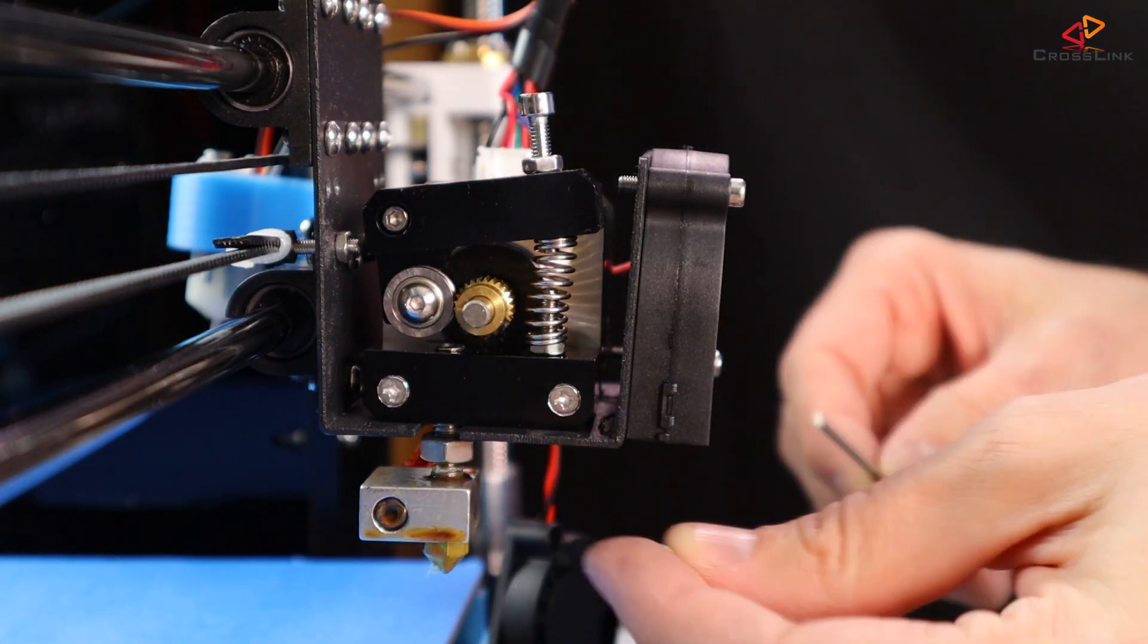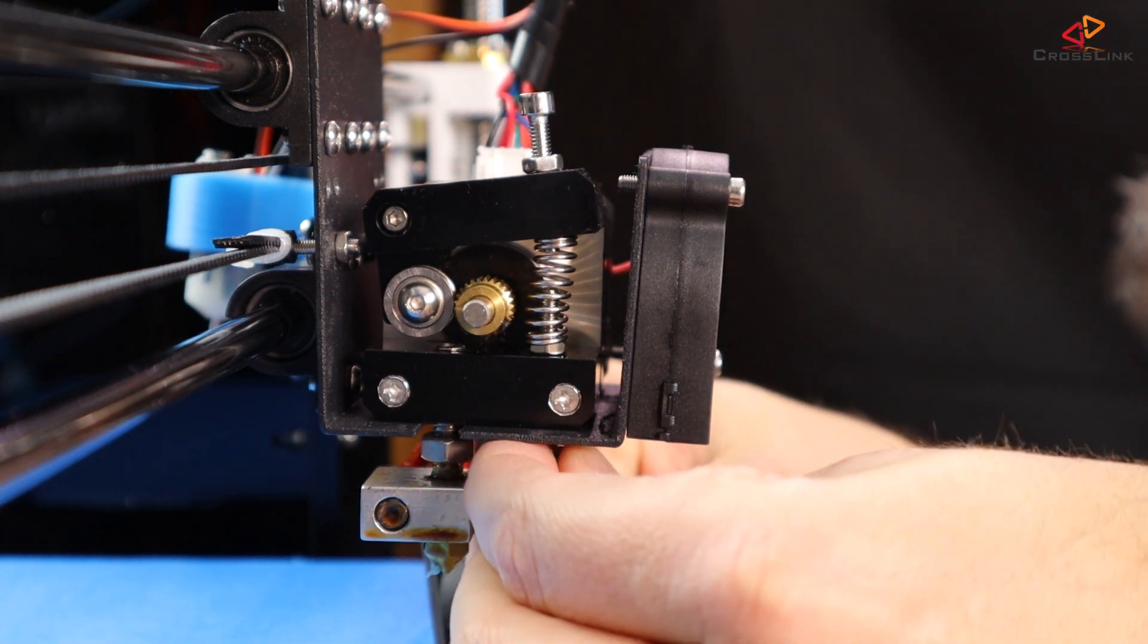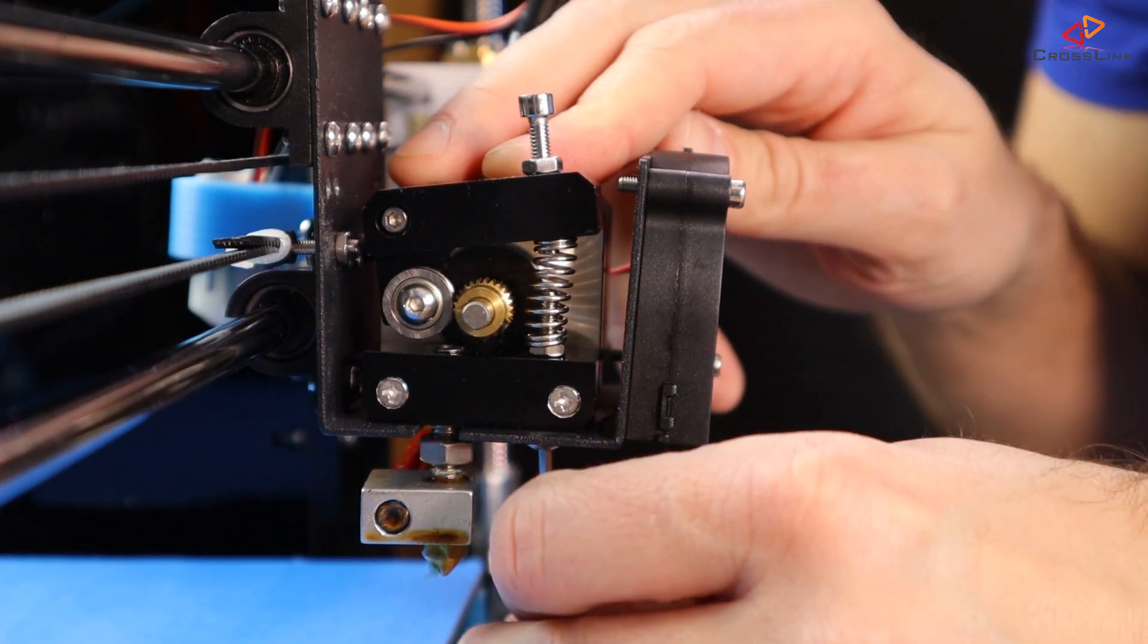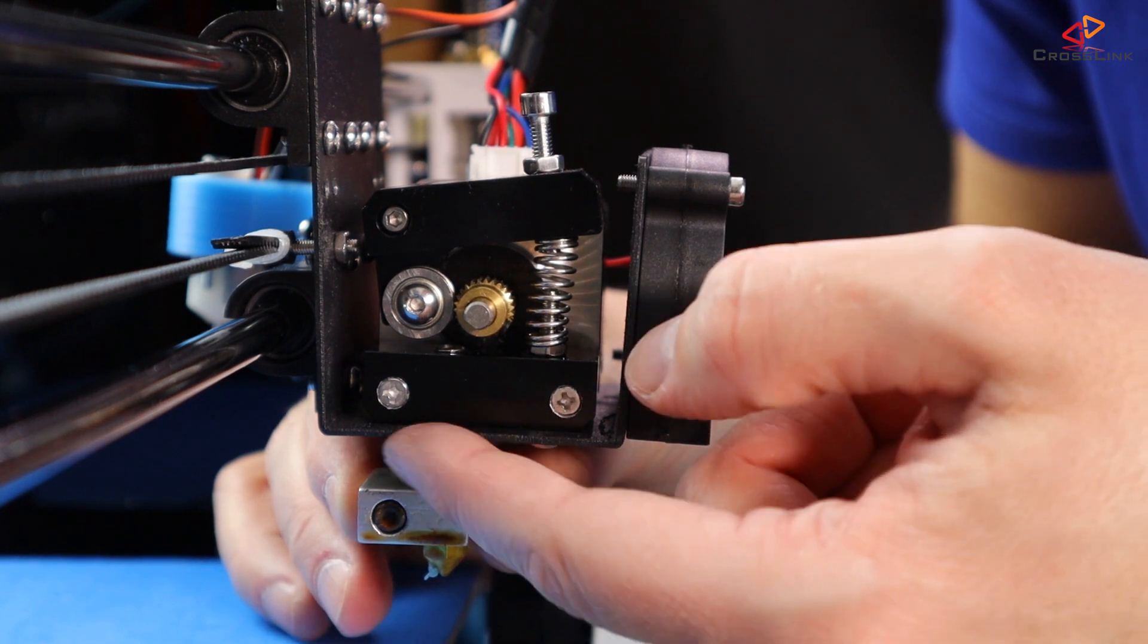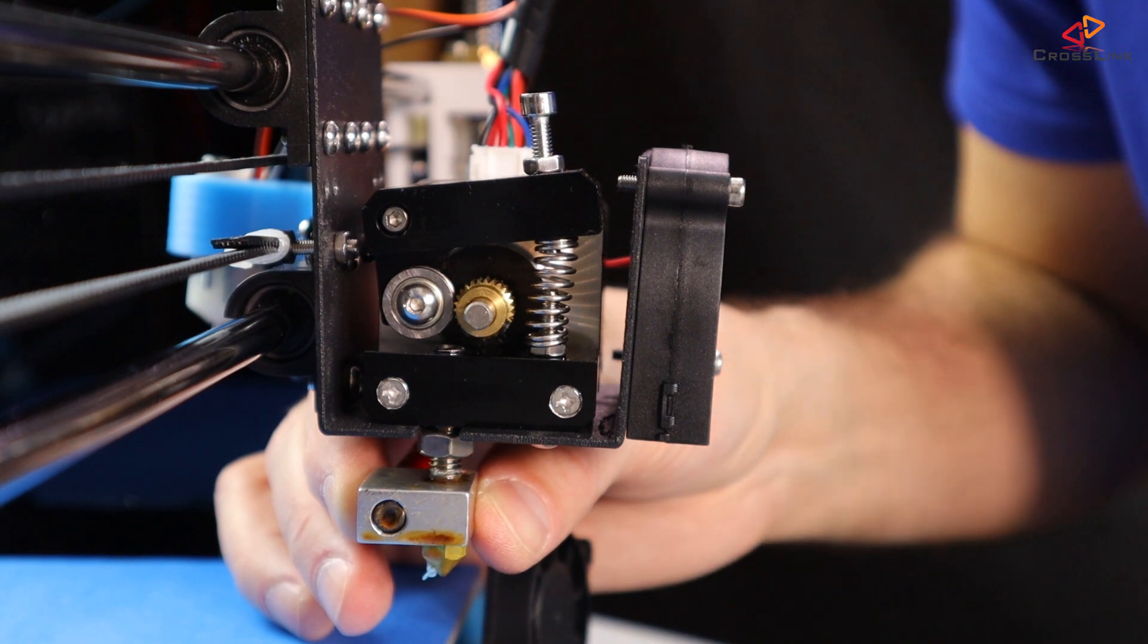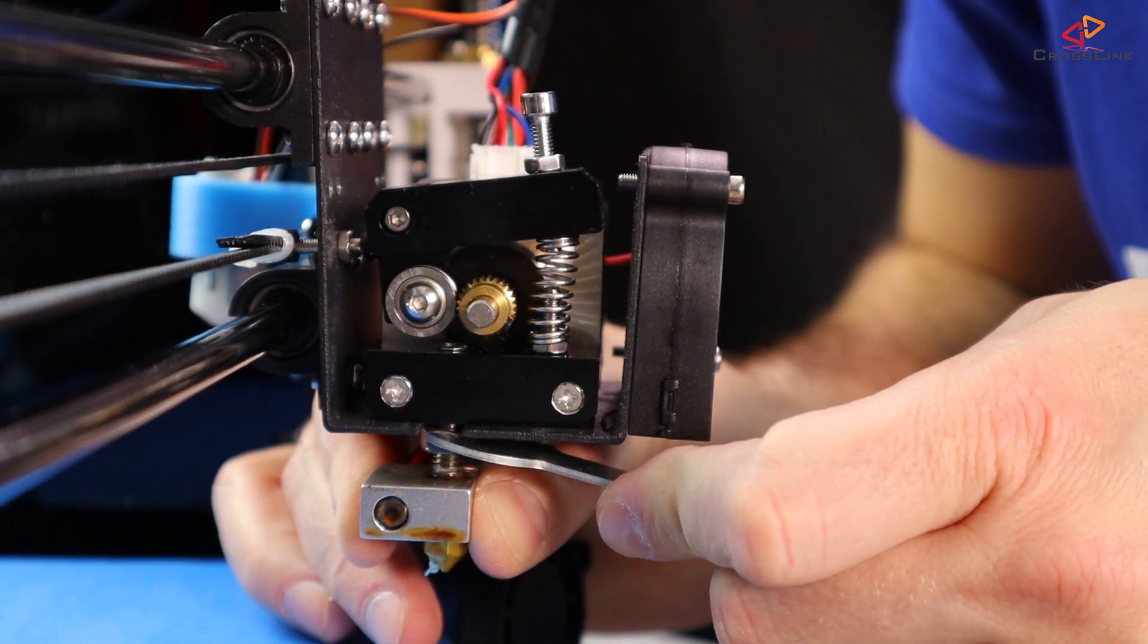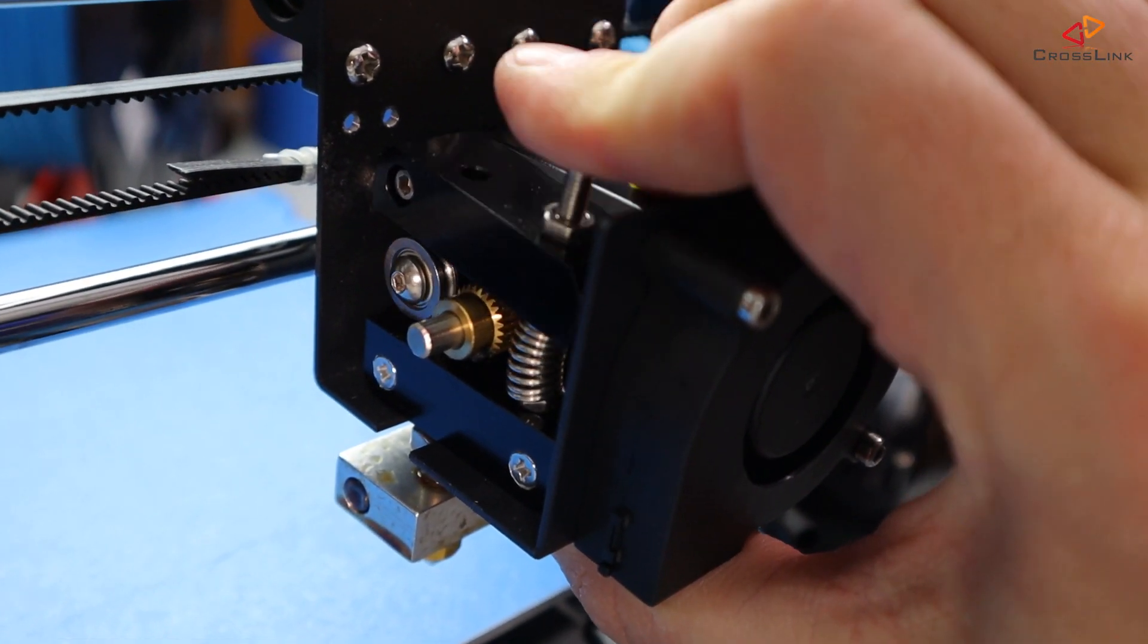Insert the hexagon bolt from the bottom of the extruder mount and tighten it with the hex wrench. Now tighten the throat nut against the extruder mount. Make sure that your throat does not unscrew from the extruder block. Check out if the extruder release mechanism works well and the spring has good tension.